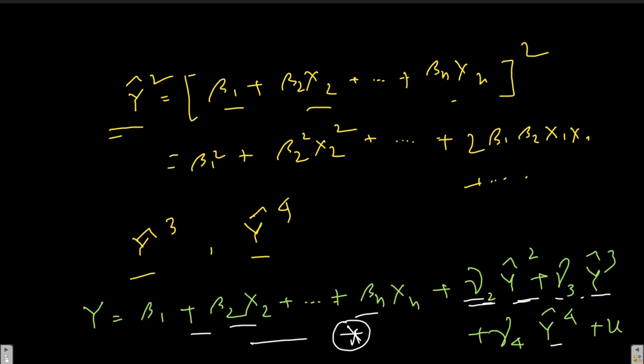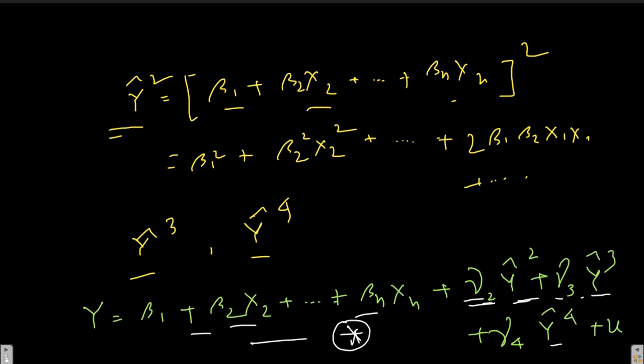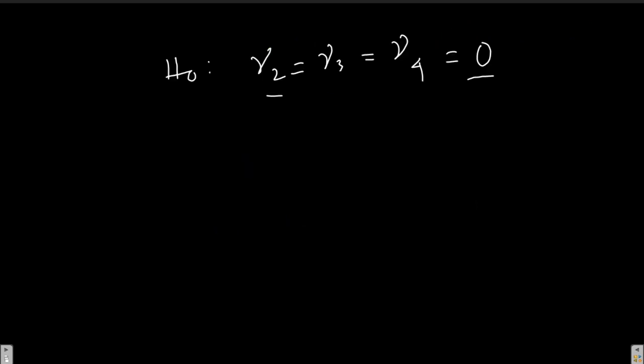If the higher-order terms are significant, we need to incorporate higher-order variables — quadratic, cubic, or interaction terms — into the model. The alternative hypothesis is that at least one gamma_i is not equal to zero, in which case the null hypothesis is rejected.